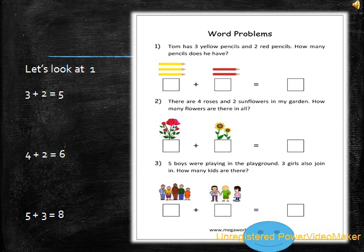Question number two: There are four roses and two sunflowers in my garden. How many flowers are there in all? We know there are four roses, that means four, plus two sunflowers, that means two, equals six.